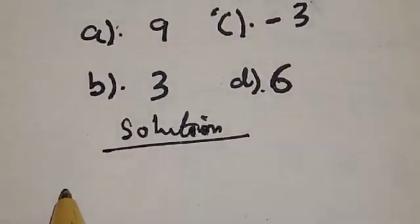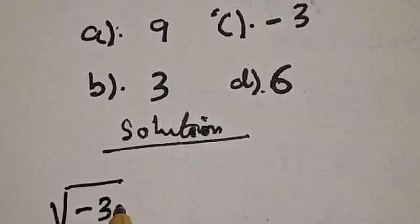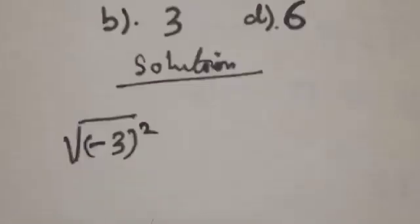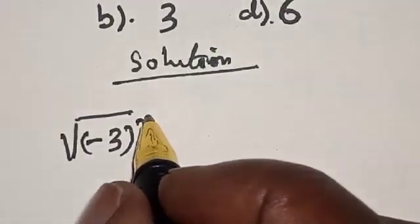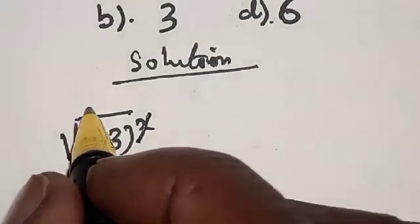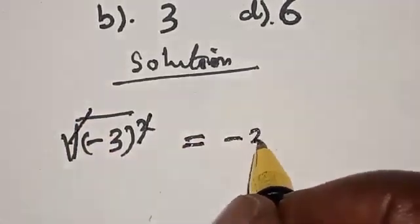We have square root of minus 3 squared. We want to know the answer if it is correct. Now ordinarily if you look at it, you may just cancel these two - we cancel this square root - then you say minus 3.